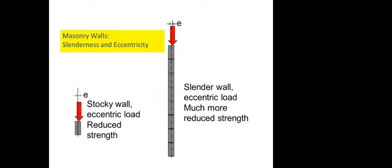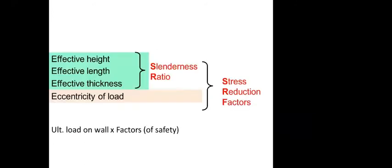A shorter wall is more resistant and has more load-carrying capacity. As it becomes slender, it becomes less resistant. When it is slender and loads are acting eccentrically, the load-carrying capacity comes down significantly. These effects are expressed in the form of slenderness ratios. The geometrical parameters, namely the slenderness ratio and load eccentricity, lead to one important factor called the stress reduction factor. If a masonry prism can withstand one unit of load, as it becomes a wall it can carry only a fraction — maybe 0.2 or 0.3 MPa instead of 1 MPa.